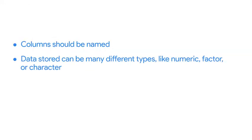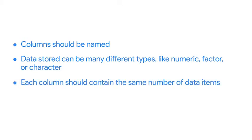Next, it's important to know that the data stored in your data frame can be many different types, like numeric, factor, or character. Often, data frames contain dates, timestamps, and logical vectors. Finally, each column should contain the same number of data items, even if some of those data items are missing.